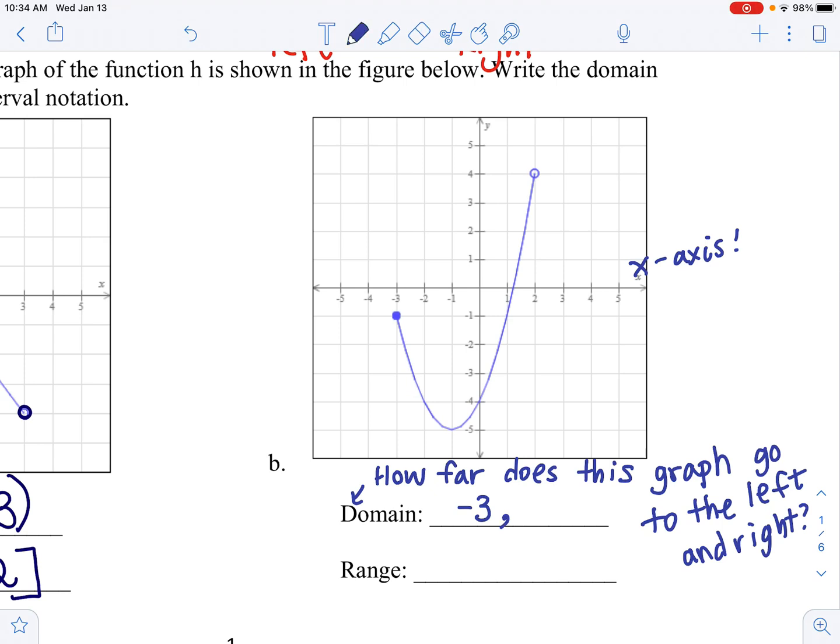But you notice that we have a closed circle right there. It's a closed circle. So you draw a bracket in front of negative 3.